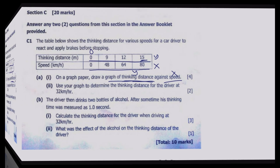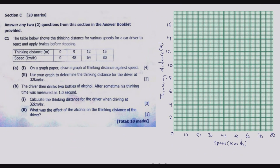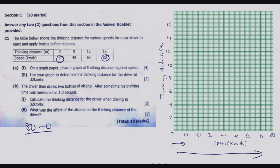Moving to the graph paper: the graph paper has been labeled clearly. It is critical to make sure that the units are scaled equally. On the x-axis we have 8 boxes and the highest value is 80 and minimum is 0, so it is 80 minus 0 over 8, which gives 10 units per box. So we move from 10, 20, 30 — equally spaced.